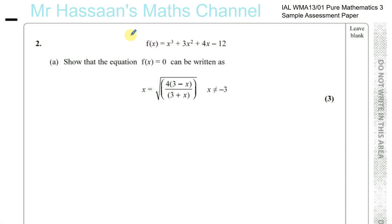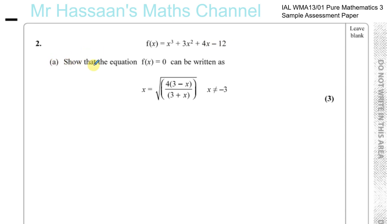This is question number 2 from the Pure Mathematics 3 sample assessment paper, International A-Level. This is a question about iteration. We have f(x) equals x cubed plus 3x squared plus 4x minus 12. Show that the equation f(x) equals 0 can be written in this form.